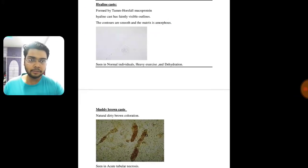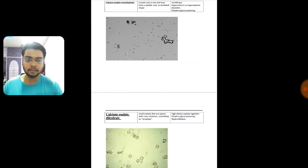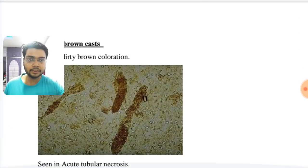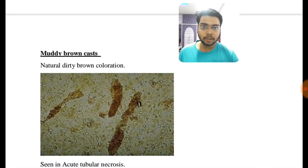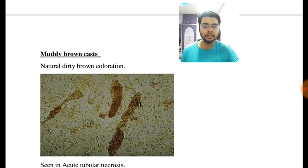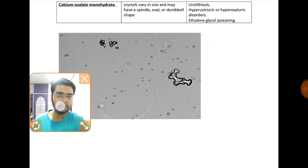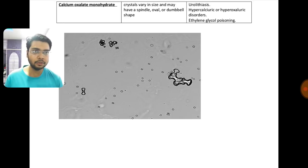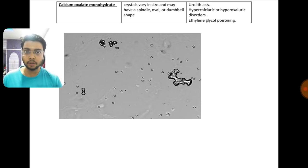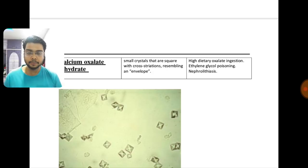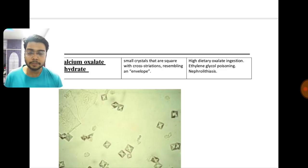Different casts and stones in urine have already been asked. Hyaline casts are seen in normal individuals, heavy exercise, and dehydration. Muddy brown casts are seen in acute tubular necrosis. Calcium oxalate monohydrate stones are dumbbell-shaped, seen in hypercalciuric or hyperoxaluric disorders or ethylene glycol poisoning. Calcium oxalate dihydrate stones are envelope-shaped.